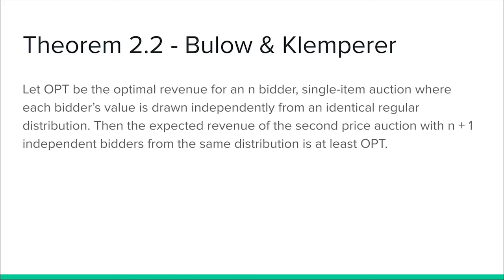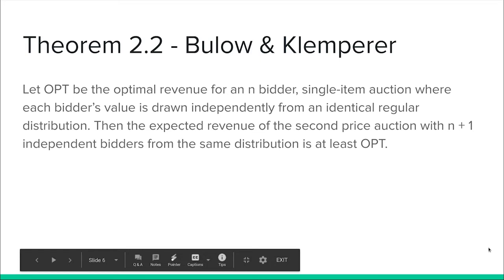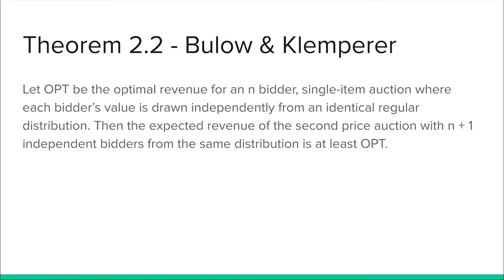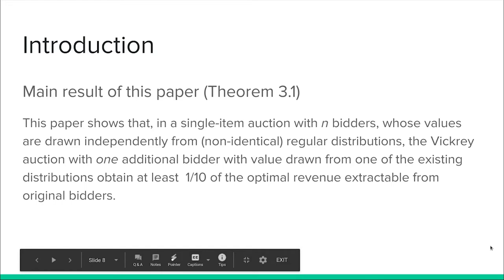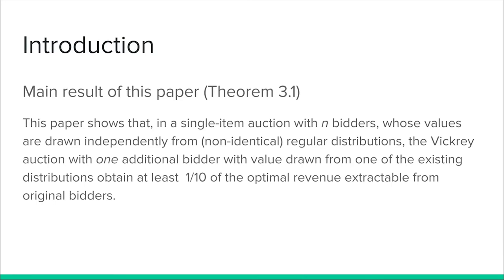An interesting result by Bulow and Klemperer states that by adding a single duplicate bidder to a VCG auction, you can extract higher revenue than the optimal auction without that bidder. However, the issue with this theorem is that all n bidders are required to come from the same probability distribution. If we relax this constraint, as shown by Hartline and Roughgarden, we can have n bidders coming from n distinct probability distributions, and if we add one duplicate from each of these distributions, the revenue we get will be at least half the optimal value.